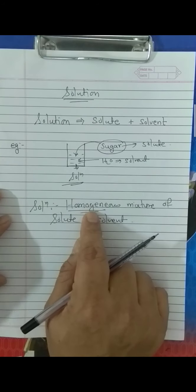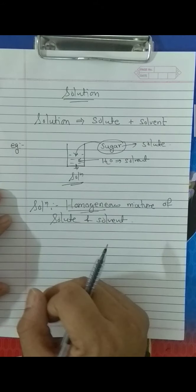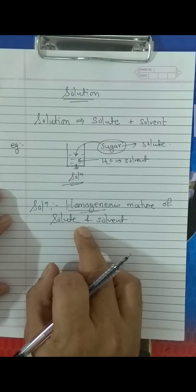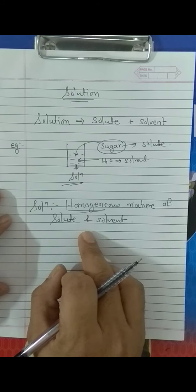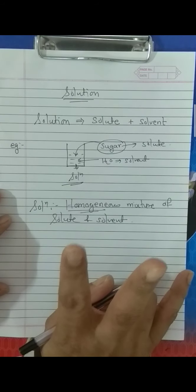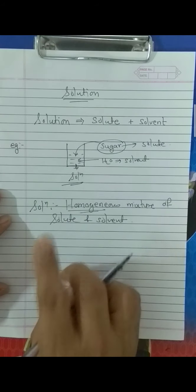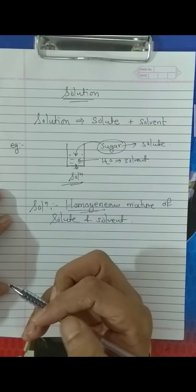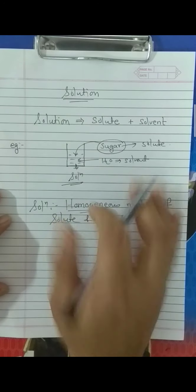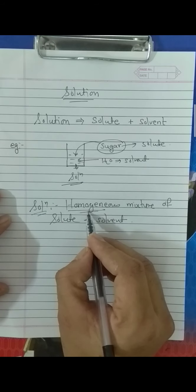The other type is heterogeneous. For example, if I add oil in water, there are two phases present: oil is the upper phase and water is the lower phase. That is heterogeneous. So the condition is, if I am talking about a solution, it should be homogeneous.